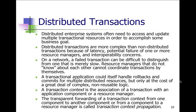Resource managers that don't know about each other cannot coordinate transactions themselves. A transactional application could handle rollbacks and commit multiple distributed resources, but only at a great cost of complexity and no reusable logic. A transaction context is the association of the transaction with the application component and the resource manager. Transparent forwarding of a transaction context from one component to another or from a component to a resource manager is called transaction context propagation.